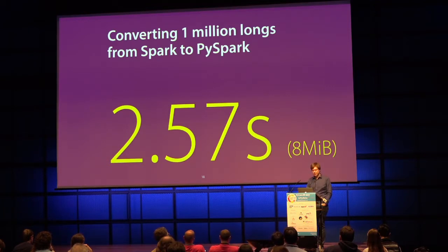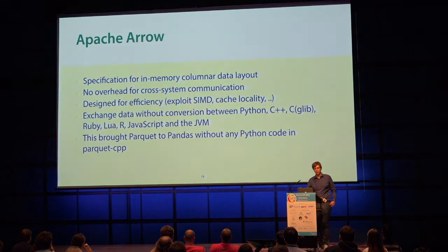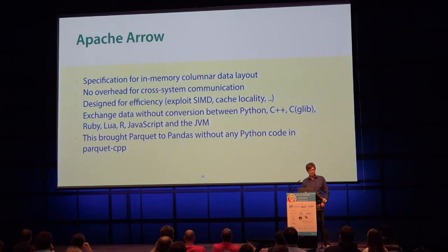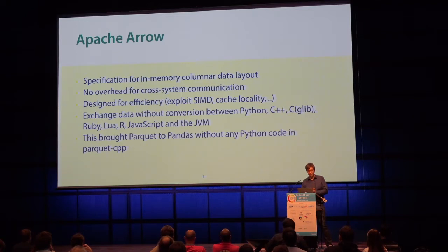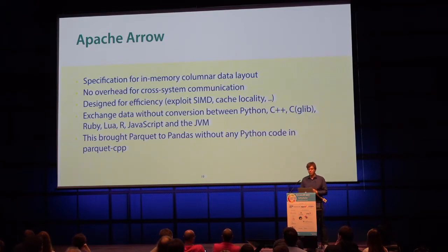To work around that — to have a format you can use to pass data frames between different systems without persisting them — the Apache Arrow project started. I originally came into that project because I was just looking for a Spark implementation, and now I'm also part of the project. It started mainly as a specification for how you store columnar data frames in memory, so that if one system has analytics data and wants to interact with another system, they share a common in-memory format.